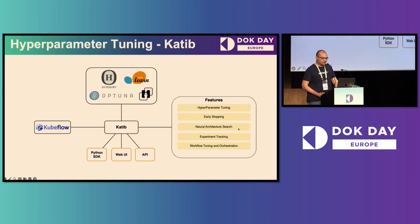For hyperparameter tuning, we use Katib. Once you have written your ML training code, you can parameterize it, and Katib runs trials to figure out the best parameters for the learning process. Katib also has a Python SDK to create Katib experiments, and the pipeline has pre-built components to run Katib experiments.